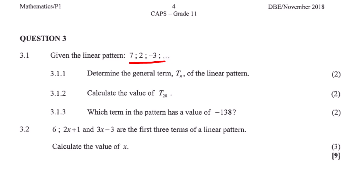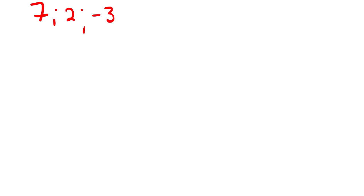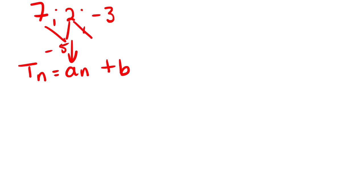The first question should be pretty simple. We have 7, 2, negative 3. We know that the general equation is an plus b, where a is the common difference. We can see that 2 minus 7 is negative 5, and negative 3 minus 2 is also negative 5. So the value of a is negative 5, giving us negative 5n plus b.